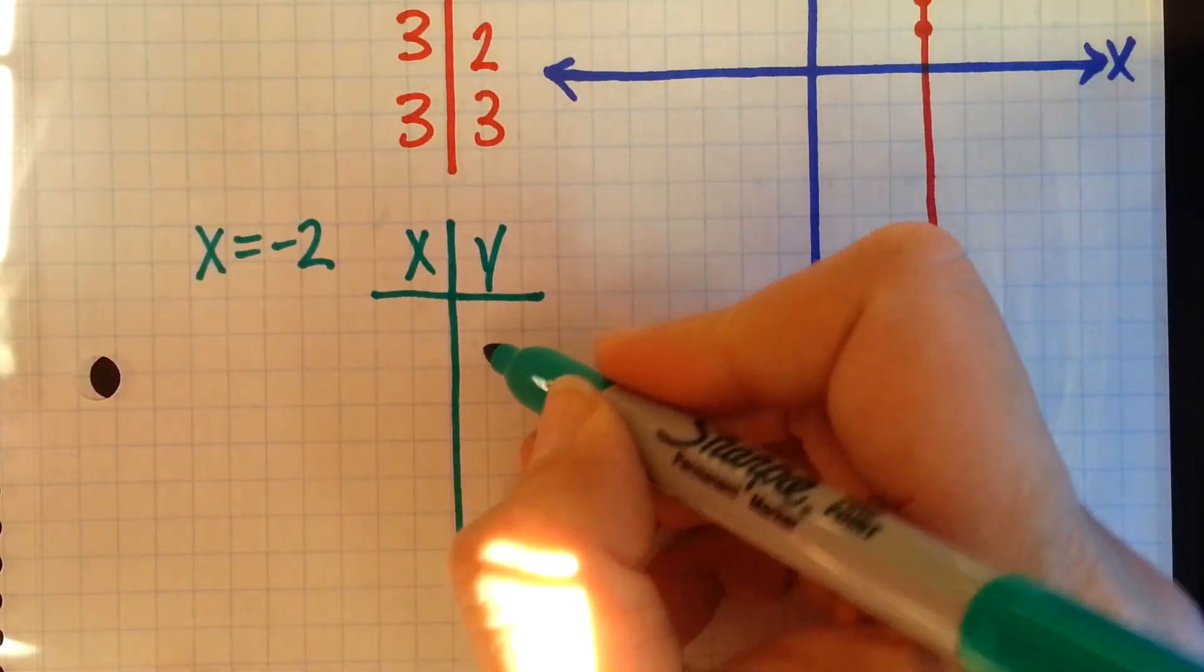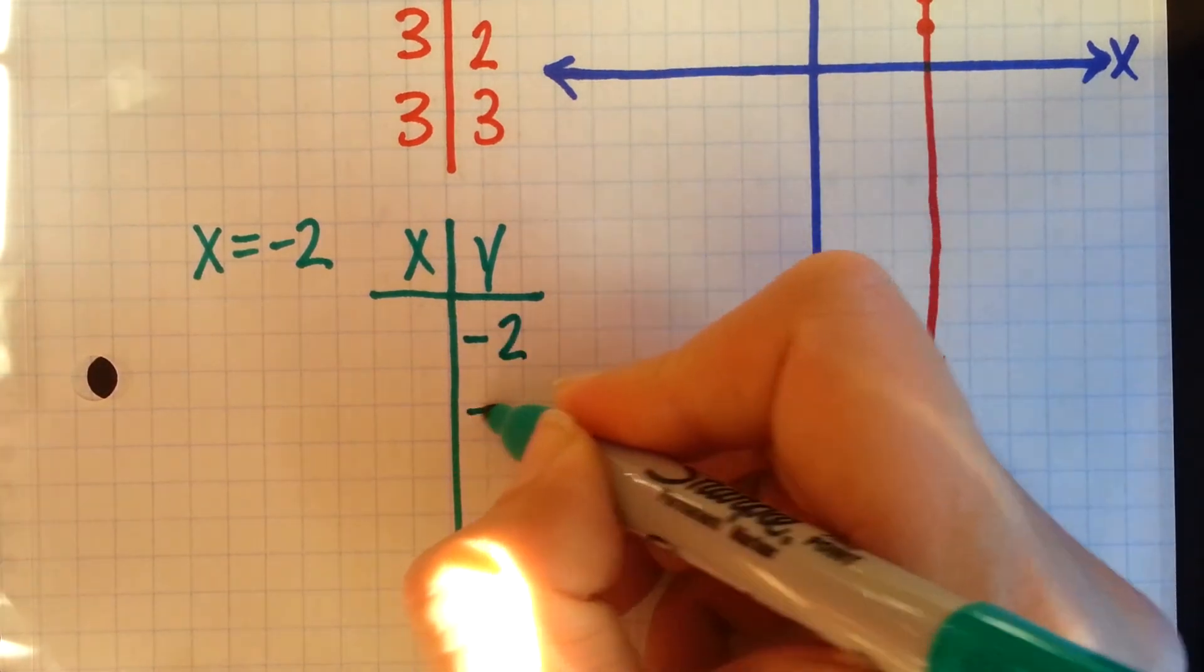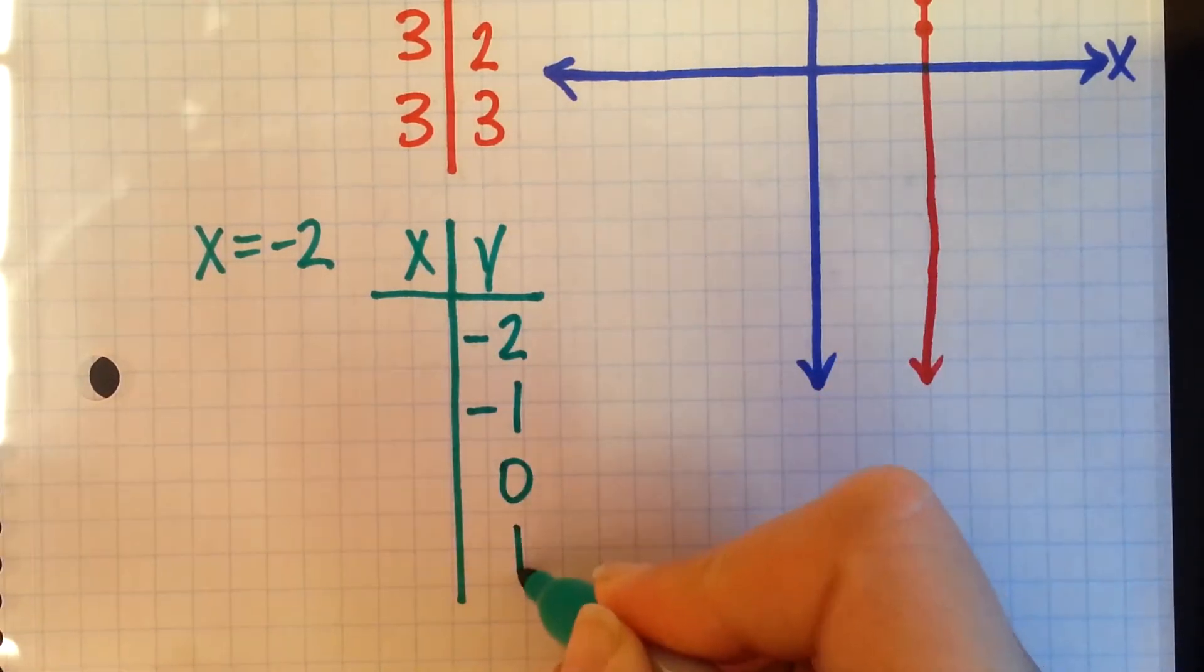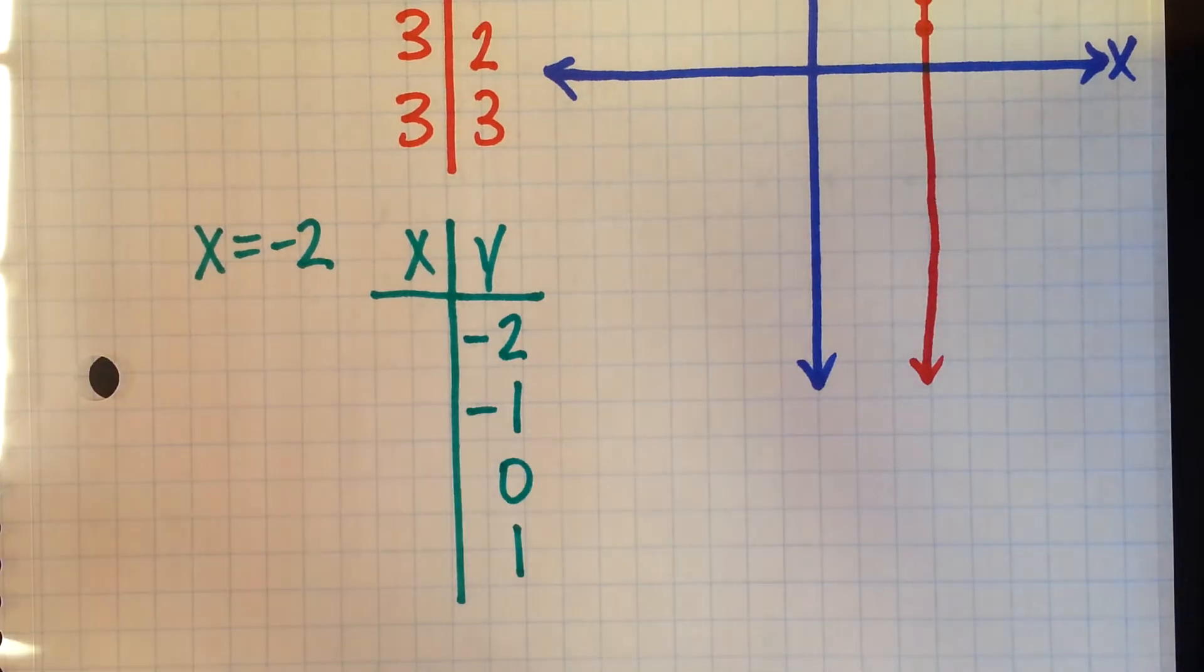So if I pick y values of negative 2, negative 1, 0, and 1, my x is always going to be negative 2.